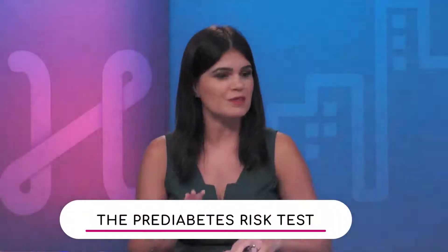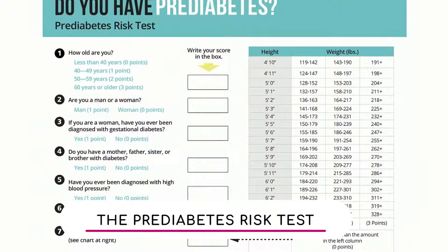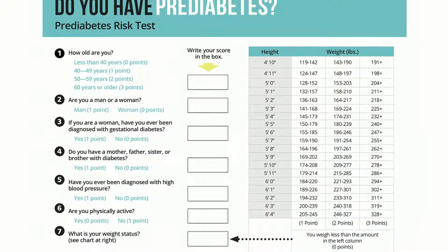Okay everyone at home, get your pencil and paper ready because it is time to take the prediabetes risk test — pop quiz! Amy is going to go through each factor. As you can see on the screen, there are seven different questions. You can tally your points, and at the end the scoring will be explained. On the right-hand side, you'll be looking for your height and weight as well.